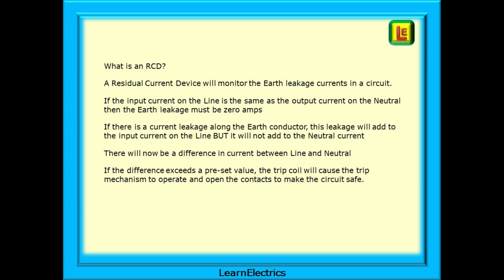An RCD is a residual current device that will monitor the earth leakage currents in a circuit. In simple terms, if the input current on the line is the same as the output current on the neutral, then the earth leakage must be zero amps and the device will not trip. This follows Kirchhoff's laws — what flows into a circuit must exactly flow out; all input currents will mathematically equal all output currents.